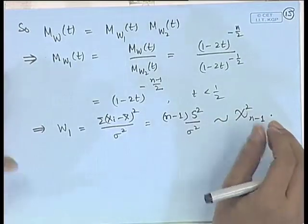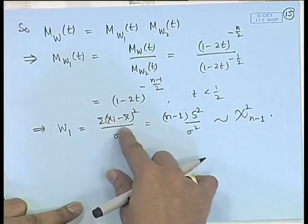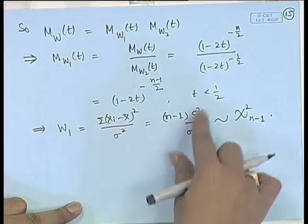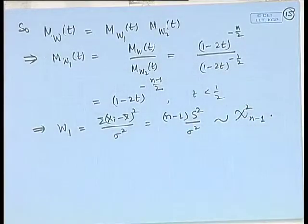This means that chi-square is the distribution of the sample variance after certain scaling. This shows that chi-square is a sampling distribution: either we consider a standard normal variable, where the sum of squares of n independent standard normal variables is χ²(n); or for arbitrary normal random variables, the scaled quantity (n−1)s²/σ² follows χ²(n−1).